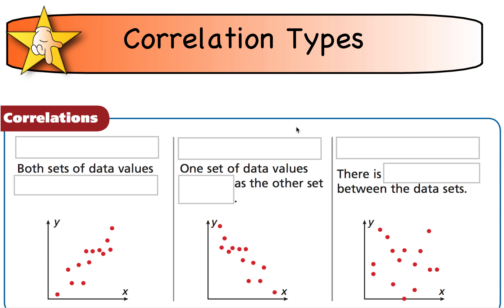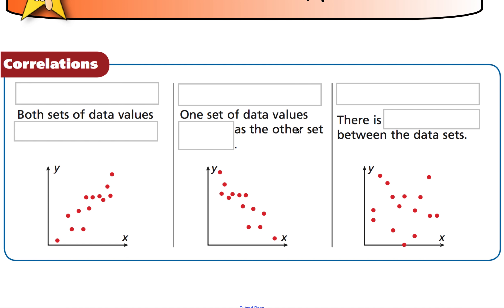There are three types of correlations that you will see. The first correlation is a positive correlation. And that happens when both set of data values are increasing. So as we increase the x-value, the corresponding y-value also is increasing. So these would have the trend line that would be drawn in here would have a positive slope.